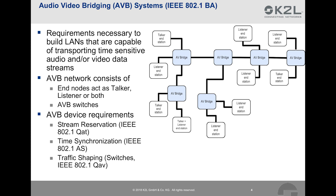The AVB device and bridge requirements include the following. Stream reservation: IEEE 802.1QAT defines how bandwidth in the network can be reserved on the way from a talker to its listeners. Time synchronization, as described in IEEE 802.1AS, ensures that all network devices have the same time base, which is important for example when two listener speakers are supposed to play the same audio stream. IEEE 802.1QAV is concerned with the traffic shaping of switches. It ensures that the maximum latency is not exceeded for the transmission of frames from a talker to a listener when reservation has successfully been made.